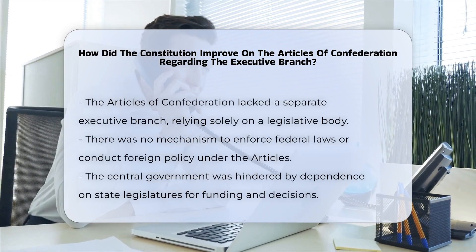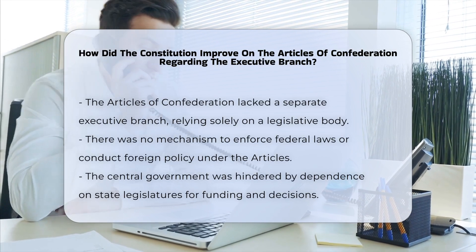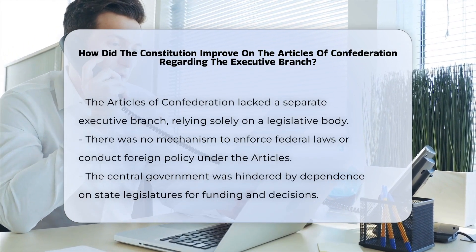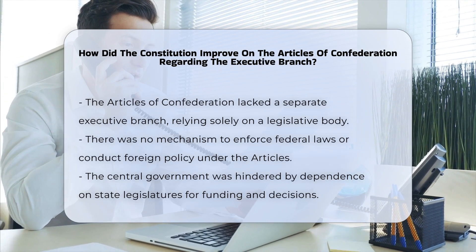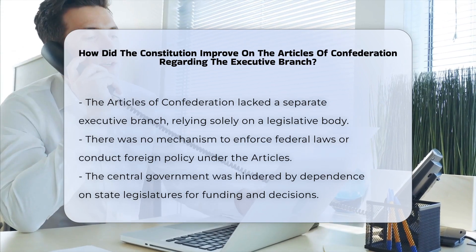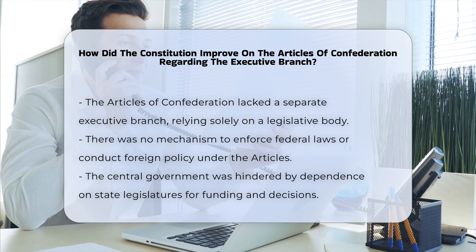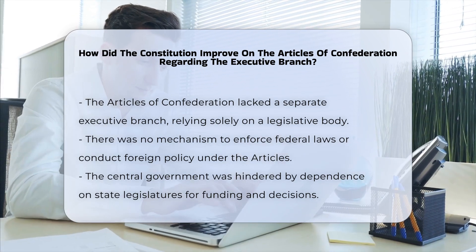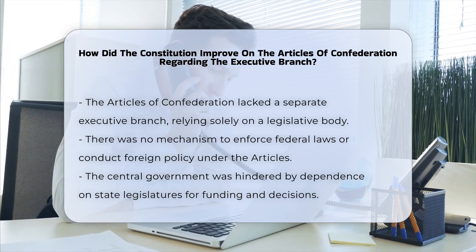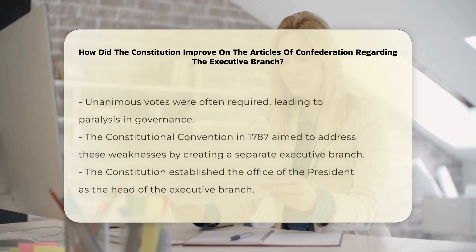Under the Articles of Confederation, there was no separate Executive Branch. The central government relied on a legislative body with no executive or judicial branches to enforce laws or conduct foreign policy. The lack of an executive branch led to significant weaknesses, including the inability to enforce federal laws and manage foreign affairs effectively. The government was paralyzed by its dependence on state legislatures for funding and decision-making, which often required unanimous votes.